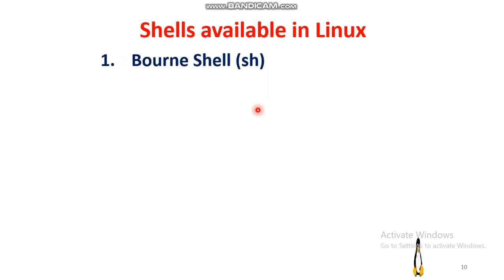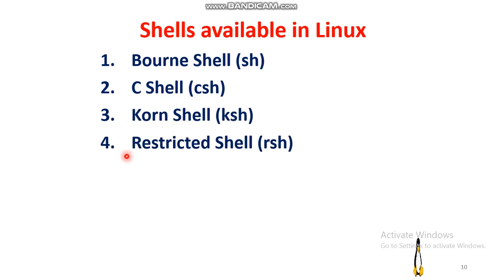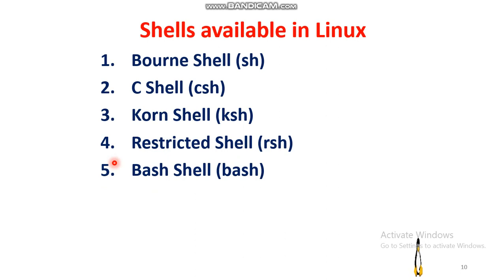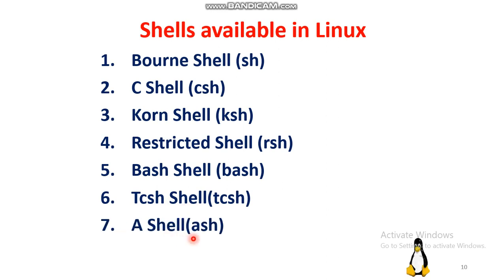The types of shells available in Linux are: 1. Bourne shell (sh), 2. C shell (csh), 3. Korn shell (ksh), 4. Restricted shell (rsh), 5. Bash shell (bash), 6. TCSH shell (tcsh), 7. Ash shell (ash), and 8. Z shell (zsh).